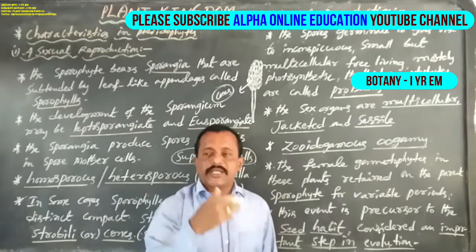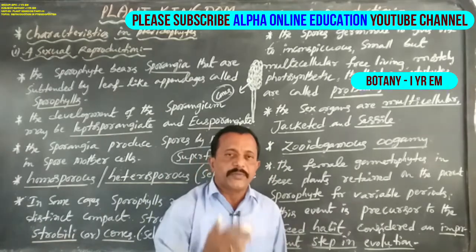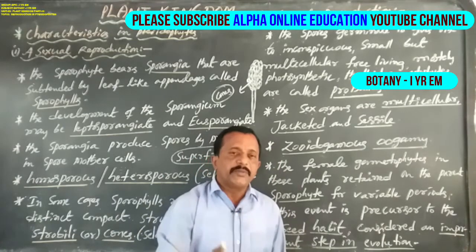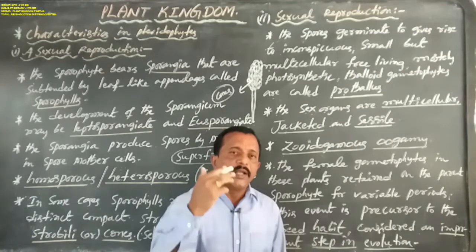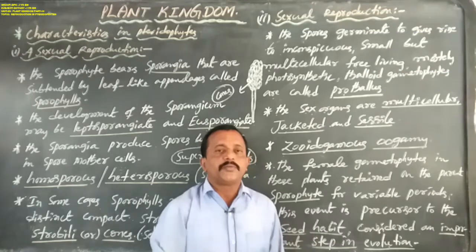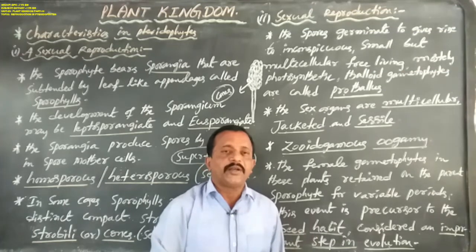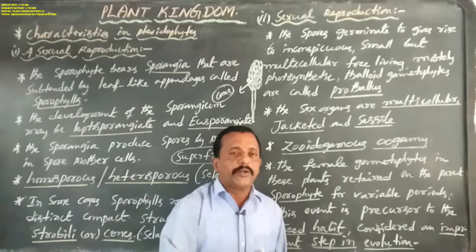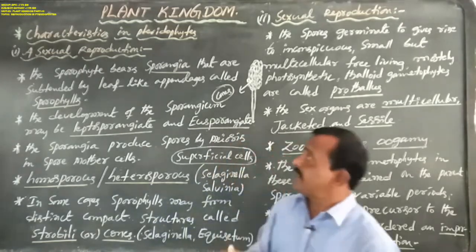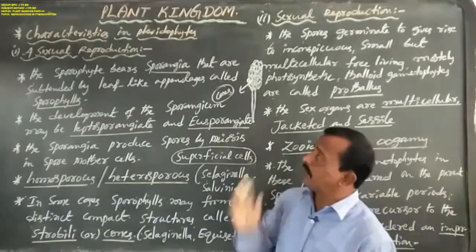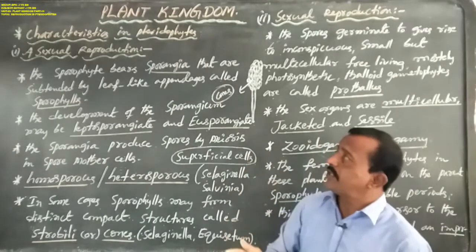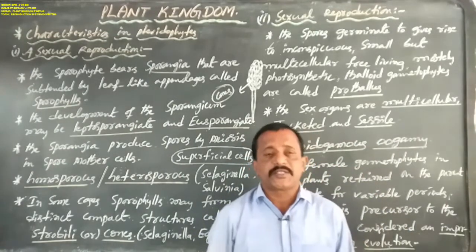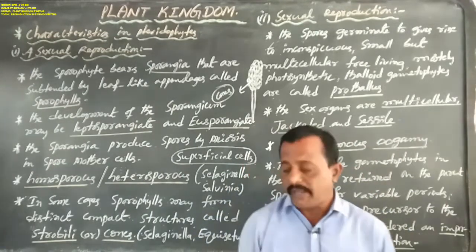In this gametophyte, after some time it germinates and develops into the well-developed plant body of the sporophyte. This summarizes both asexual reproduction and sexual reproduction in pteridophytes. Thank you.